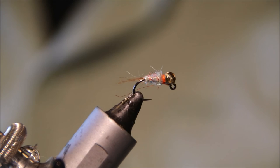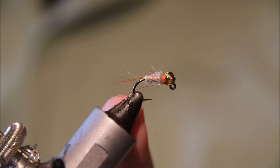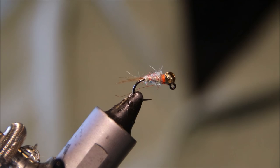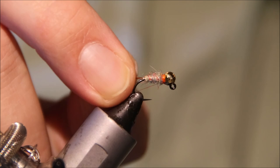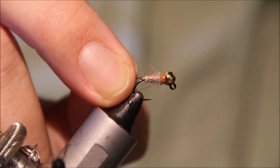There you go. A wee sow bug dubbing nymph tied on a jig hook. You don't need to tie on a jig hook, you can tie on a curved hook, tie it on a straight hook if you like. Vary the bead size to change the weights, tie them in a couple of different sizes. Well worth a go if you do any sort of short line nymphing.